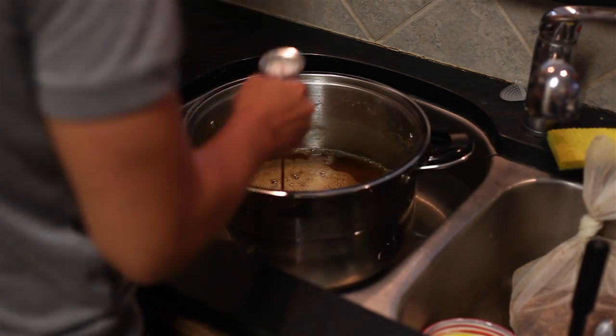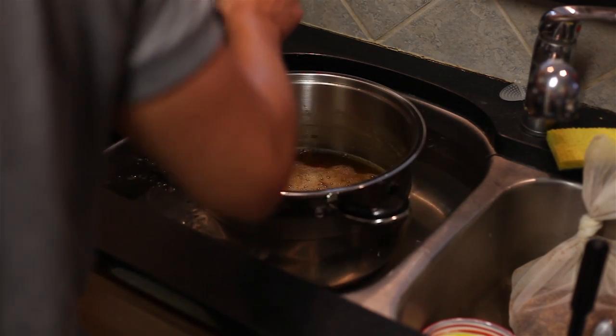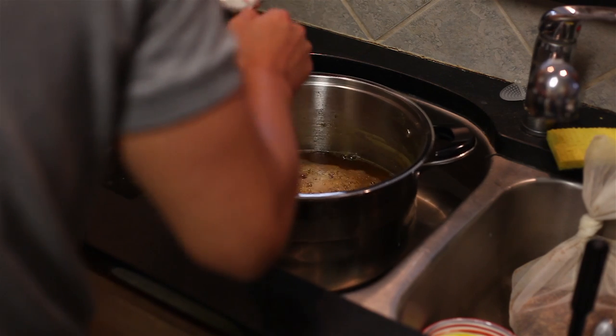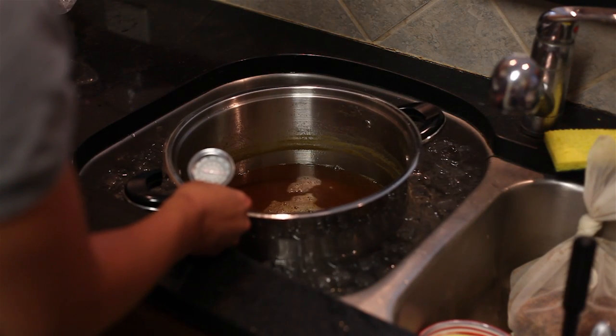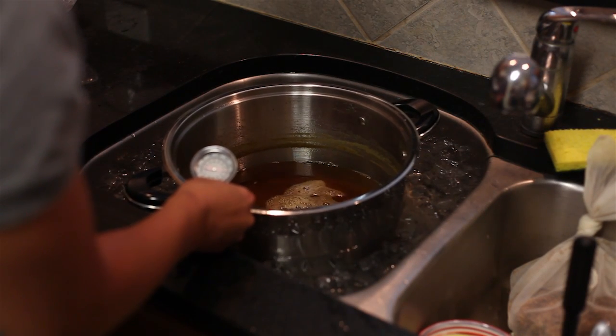Remember to stir constantly and monitor temperature. Once you have reached room temperature, remove the pot from the ice bath and place it on a towel and dry the outside of the pot. This will prevent any water from dripping into your wort when you transfer it to the primary fermenter.